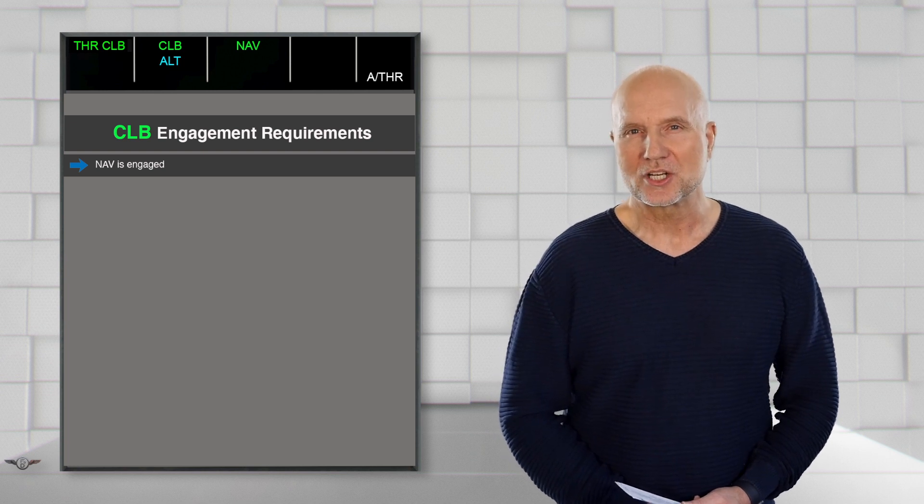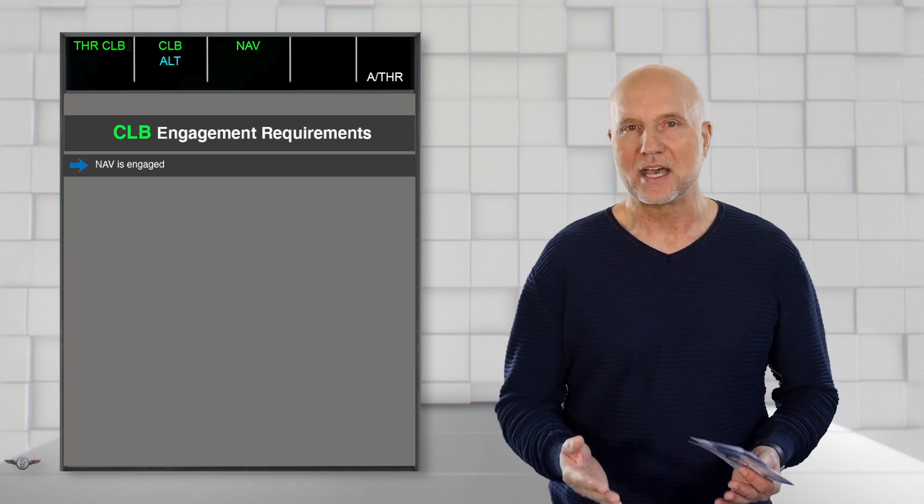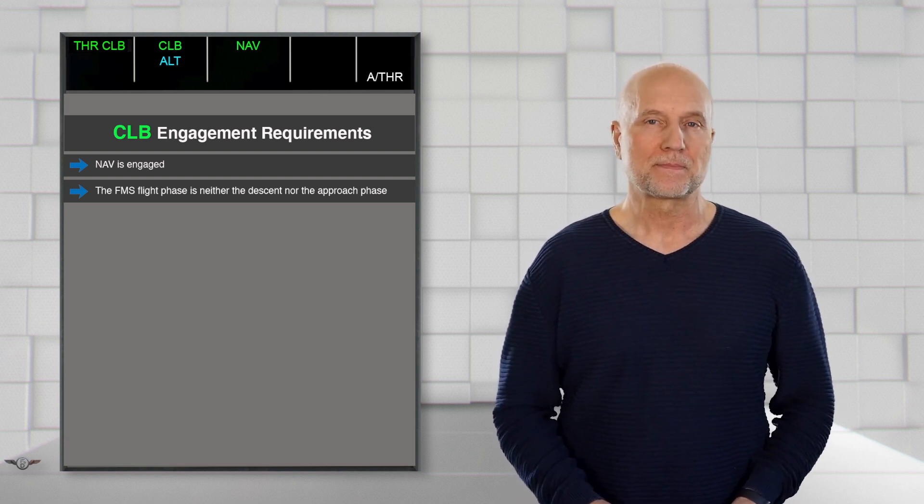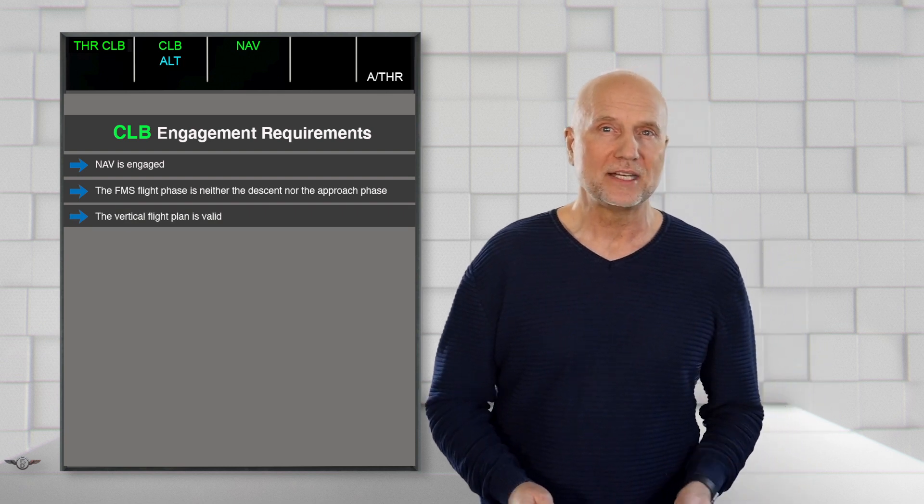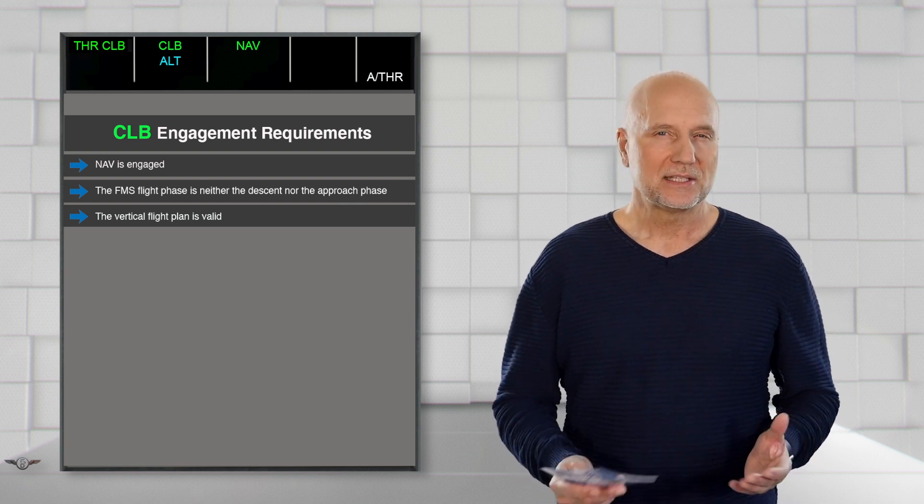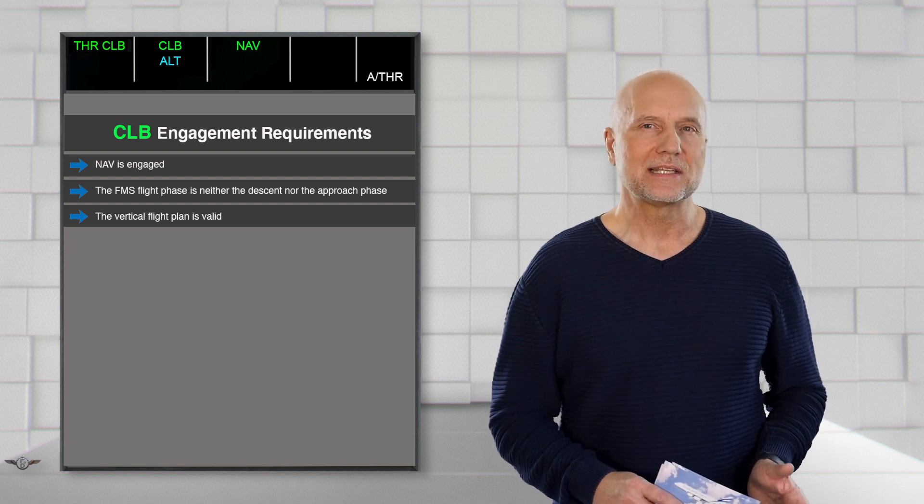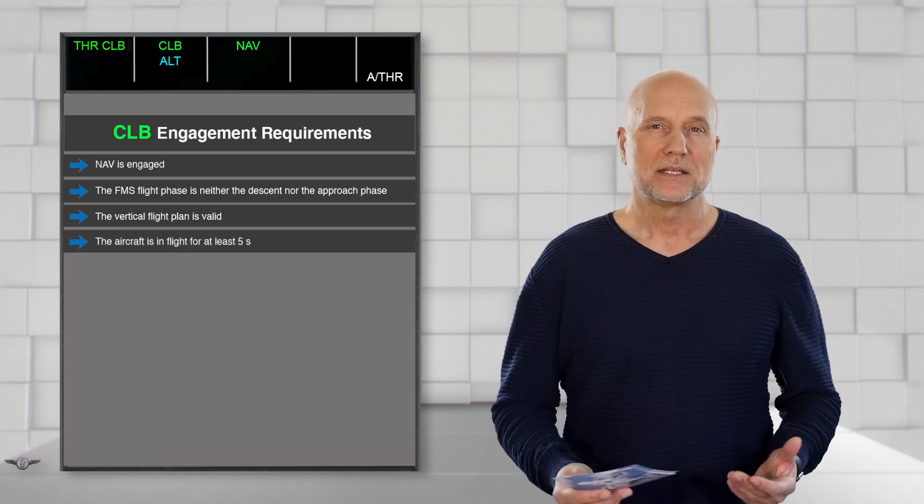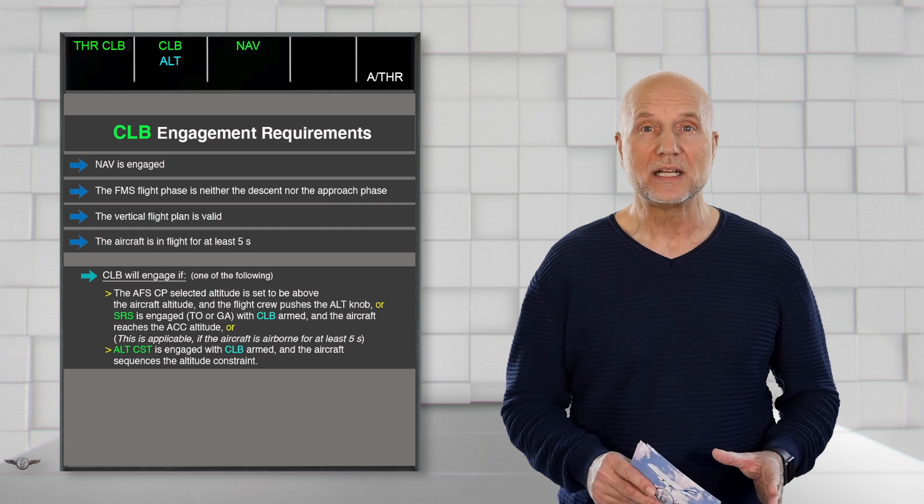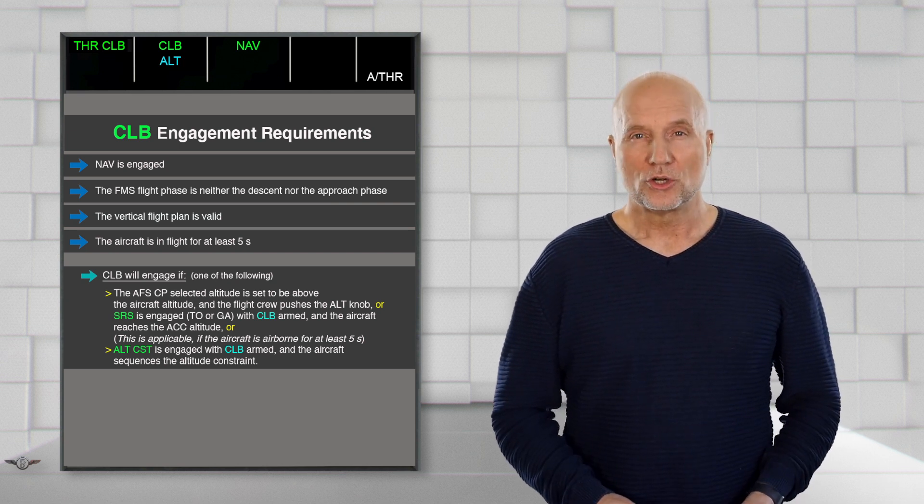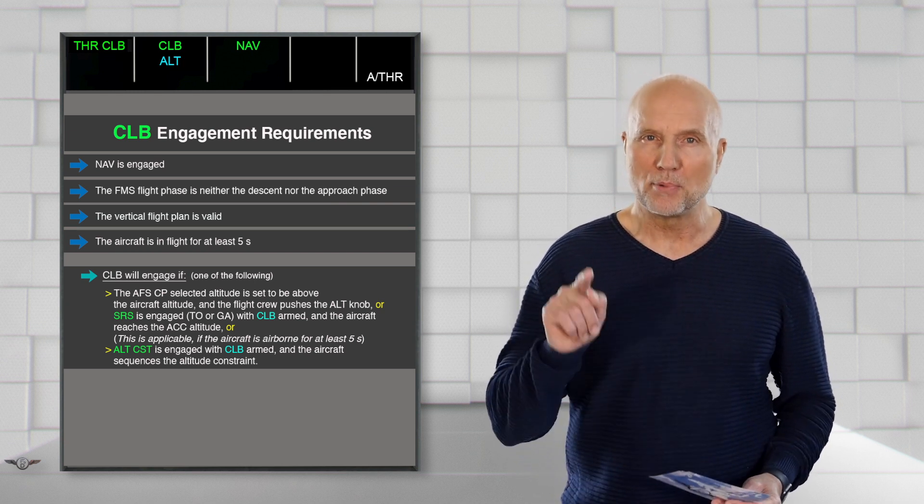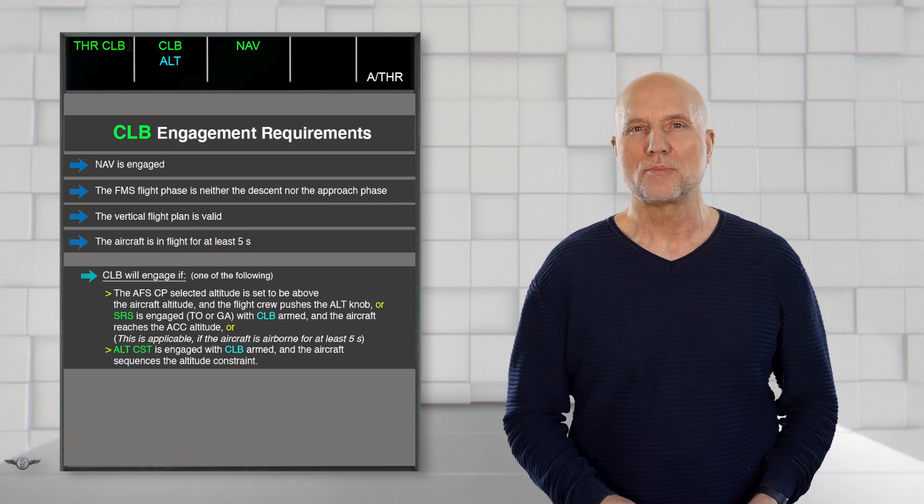The lateral managed mode NAV has to be engaged, as we can see on the FMA in the third column. As the aircraft is flying managed, i.e., it is following the FMS guidance, neither the descent nor the approach phase must be activated. The vertical flight plan has to be valid, which means no flight plan discontinuity is immediately ahead in the flight plan. Similar to restrictions we've seen in other modes, the aircraft has to be airborne, this time for a minimum of five seconds. One of the following conditions will engage Climb: The altitude selected on the AFS-CP is above the present aircraft altitude and the pilot flying pushes the altitude selector knob on the AFS-CP.